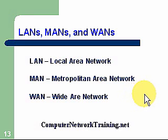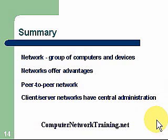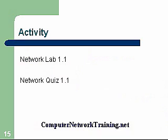Summary: a network is a group of computers and devices connected in order to control access and share resources. Networks offer advantages. Peer-to-peer allows you to share resources between computers — one computer might have a printer that can be shared with others. Client-server networks have central administration, central control, which is very important. For your activity, I want you to do network lab 1.1 to reinforce what we just covered, and then there's a quiz to take as part of an assessment. That's it for this first part — thank you very much for your time.